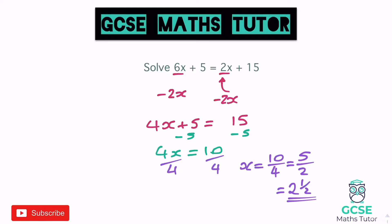The first thing you need to do is obviously just to get the x's on one side of the equation. The easiest way to do that was just to subtract 2x from both sides, but ultimately we just want to get the x's on one side, isolate the x's on their own, and then get all the numbers onto the other side. And that's what we just need to try on all of these questions, so let's have a look at the next one.